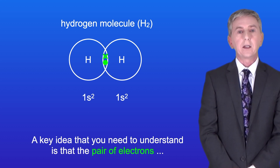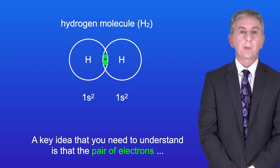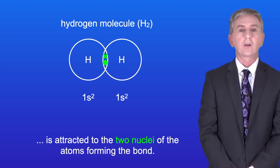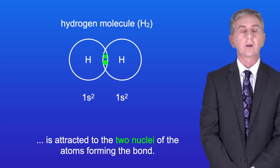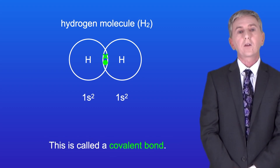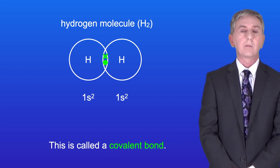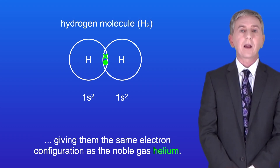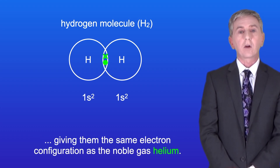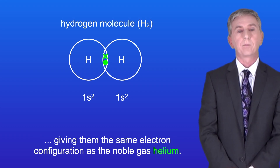A key idea you need to understand is that the pair of electrons is attracted to the two nuclei of the atoms forming the bond. This is called a covalent bond, and both atoms now have two electrons in their outer shell, giving them the same electron configuration as the noble gas helium.